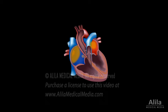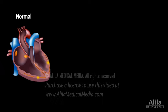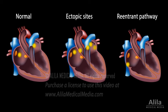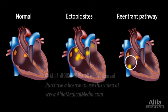Arrhythmias occur when abnormal electrical circuits override the normal conduction. Common abnormal rhythms are either initiated from ectopic sites outside the SA node, or caused by an electrical impulse that travels around in a localized self-perpetuating loop called a re-entrant pathway.